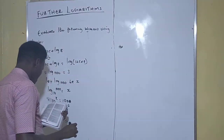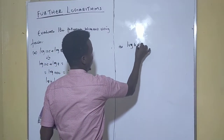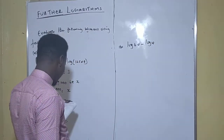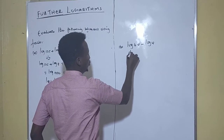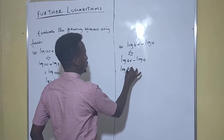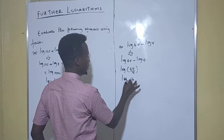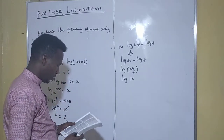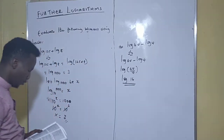Let's see part B. We have log 64 minus log 4. Understand this — the moment you have minus, it means division. So this can be written as: log 64 minus log 4 equals log of (64 divided by 4), which gives us log 16. You are going to leave it there because you cannot go further. This is the final answer.